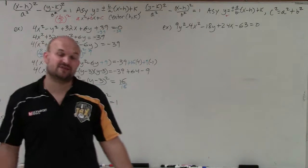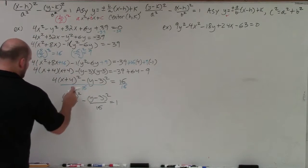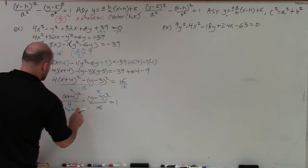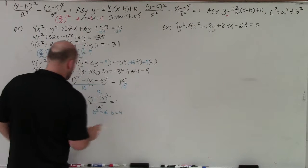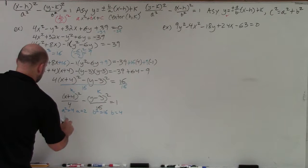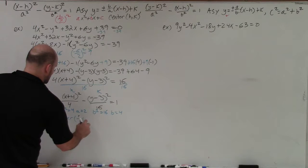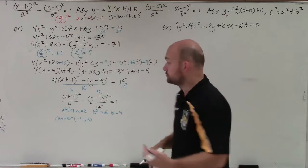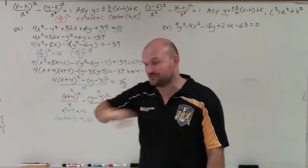Now I just need to identify the center, vertices, foci, and asymptotes. The center is always your h and k. I know that a² = 4, so a = 2, and b² = 16, so b = 4 — remember, it's always a² minus b². The center is opposite of h and opposite of k, so that's (−4, 3). Since my a is under my x, it's a horizontal transverse axis.